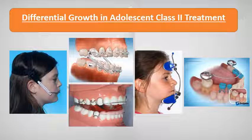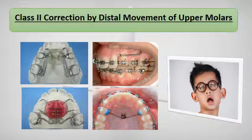Differential growth in adolescent Class 2 treatment includes extra-oral appliances such as headgears and face masks, functional appliances either fixed or removable, and space maintainers and space supervision. Class 2 correction by distal movement of the upper molar includes different types of distalizers, including buccal distalizers, palatal distalizers, conventional distalizers, and implant-supported distalizers.